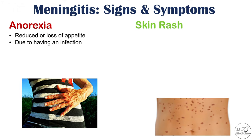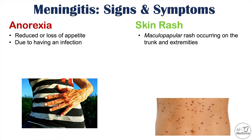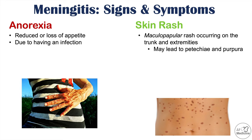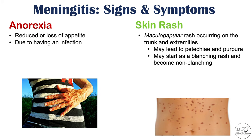Patients with meningitis can also have a skin rash, which can be a very important manifestation. Some patients may have a maculopapular rash that occurs on the trunk and extremities. They can also have petechiae and purpura — small spots of blood under the skin. This skin rash can start out as a blanching rash and then become non-blanching over time.